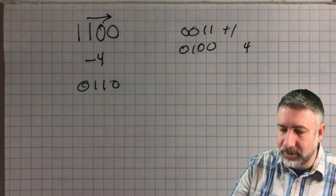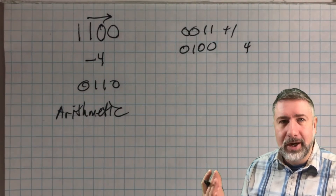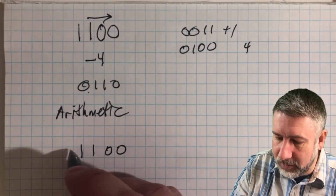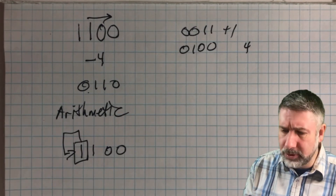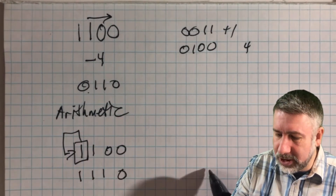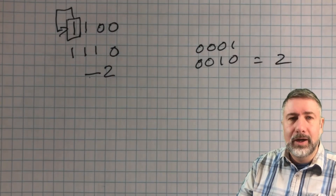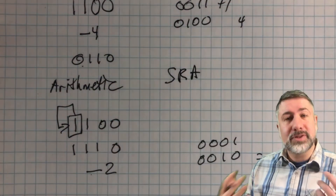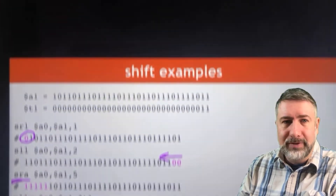Instead, we implement arithmetic shift, which preserves the sign bit. Rather than shifting in a zero, we take 1 1 0 0 and replicate the sign bit — just copy it instead of shifting in a zero. The logic is simple: a multiplexer decides whether to shift in a zero or the sign bit. The result is 1 1 1 0, and flipping bits and adding one gives 2, so this is negative 2. We go from negative 4 to negative 2, showing that shift right arithmetic preserves the sign and gives the expected result when dividing by two using a shift for a signed number.